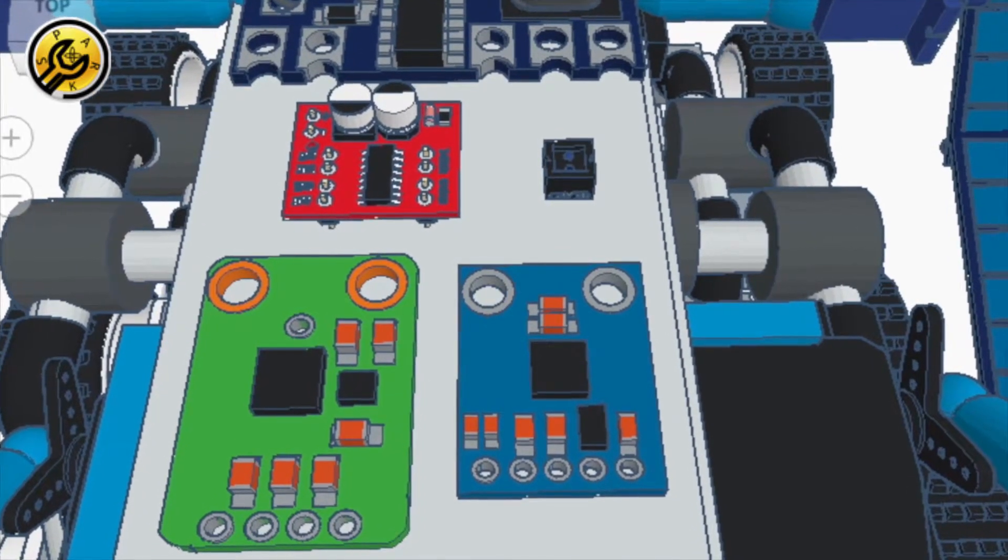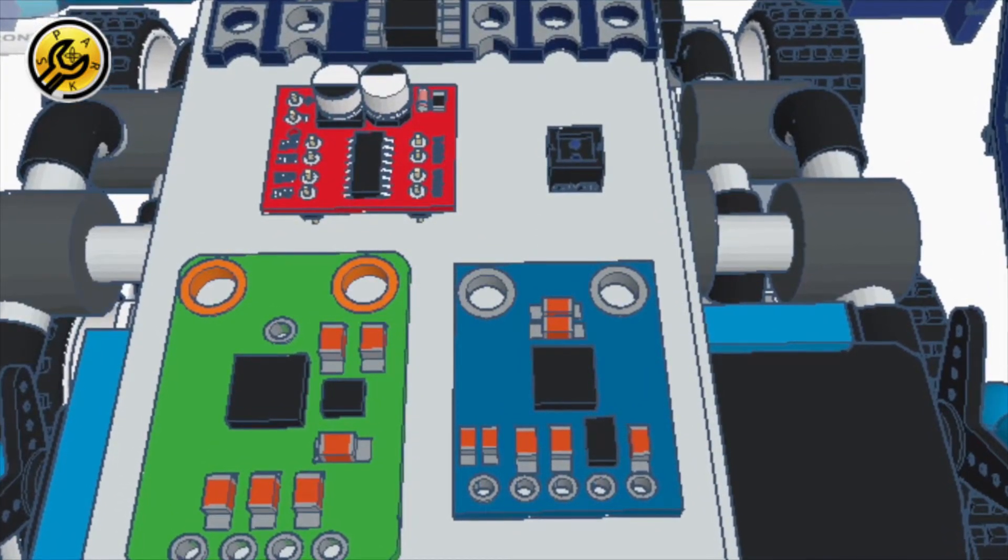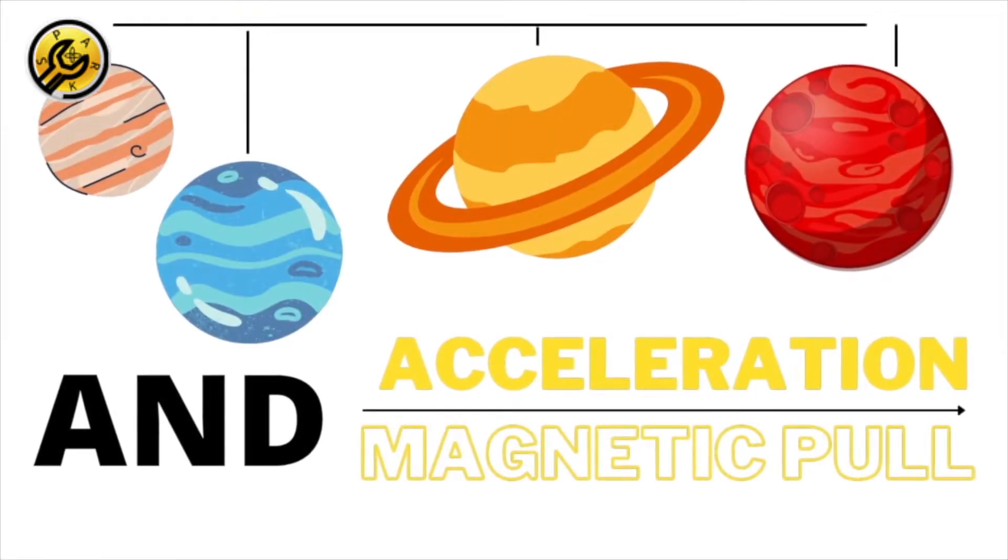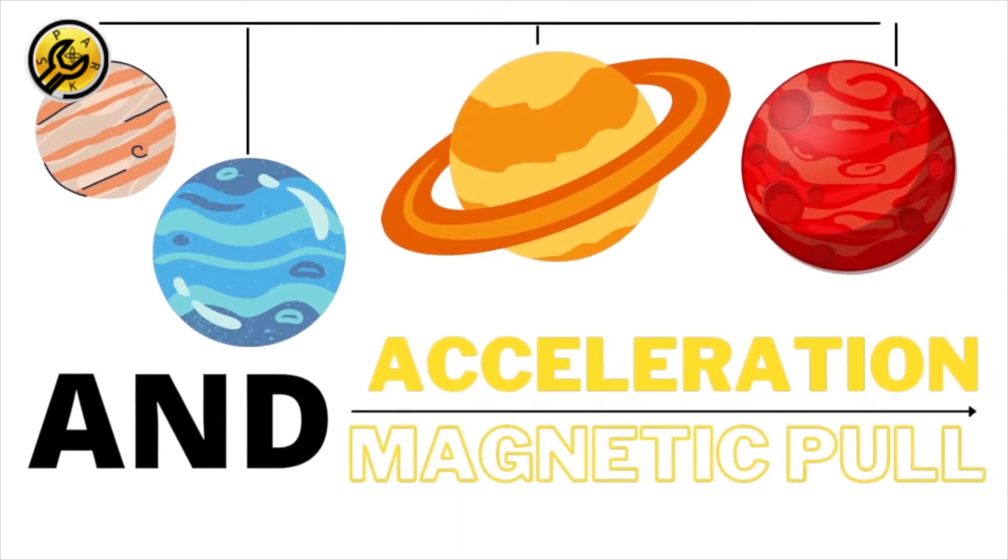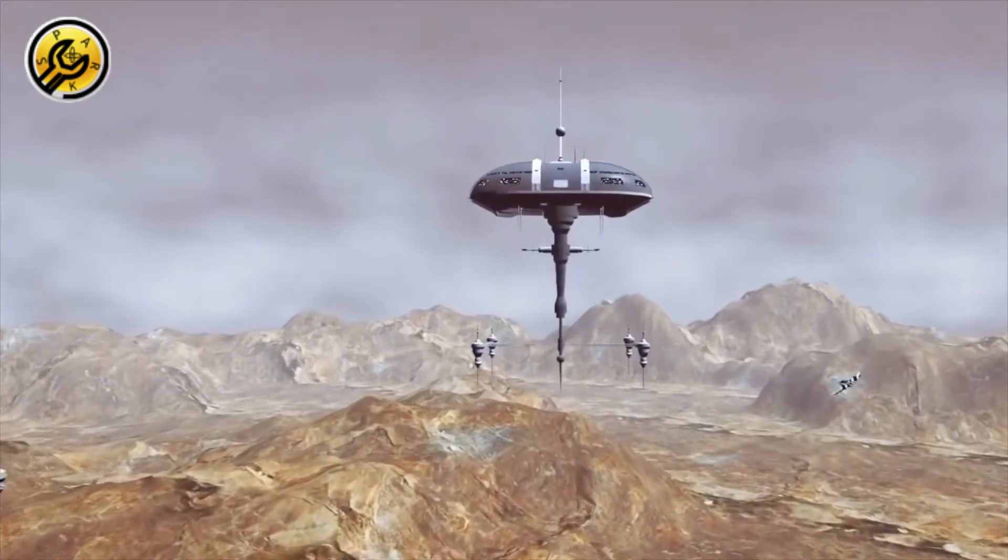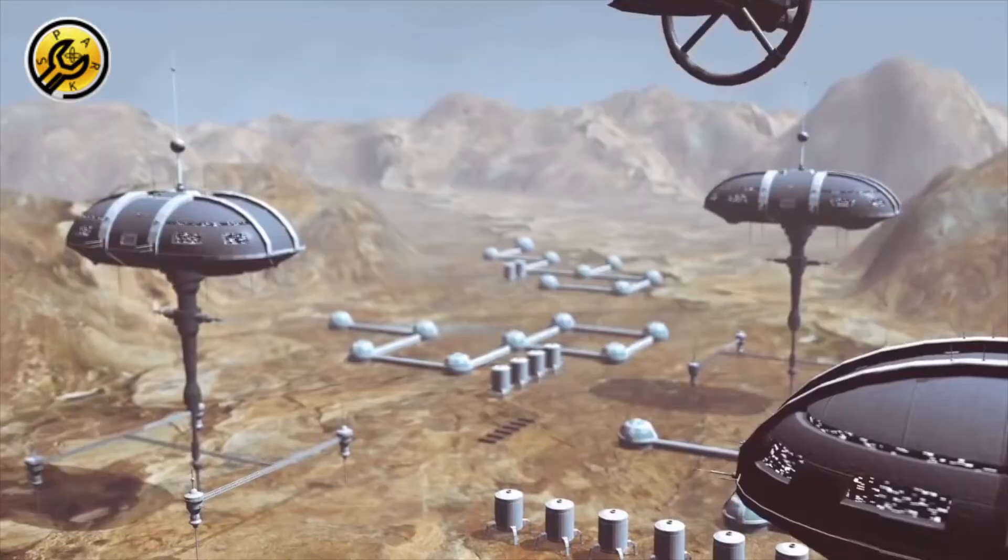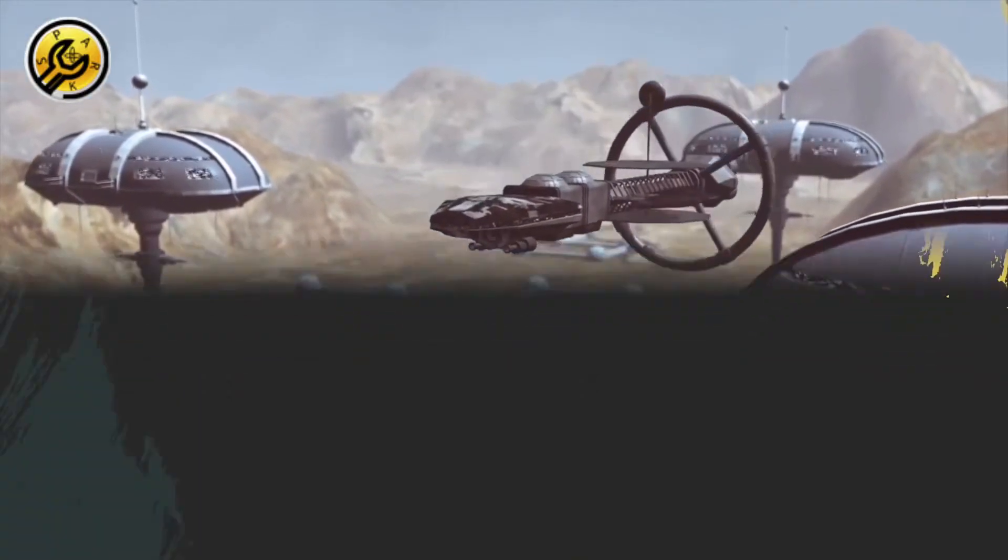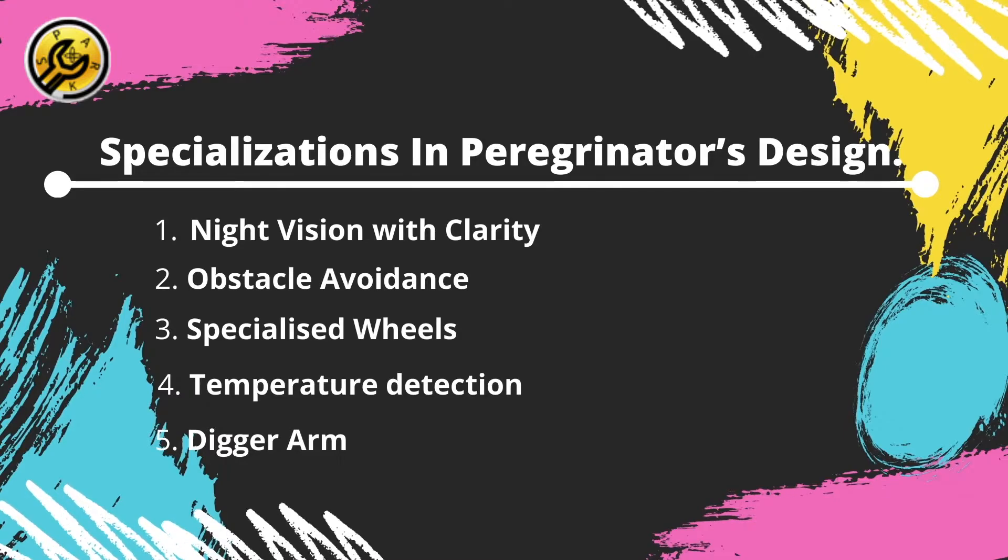It has a triple axis magnetometer and accelerometer for measuring the magnetic pull and acceleration of the planet. These data are meant to plan the establishment of rocket bases on the surface of the planet in future. Besides these, there are some regular specializations in Peregrinator's design.